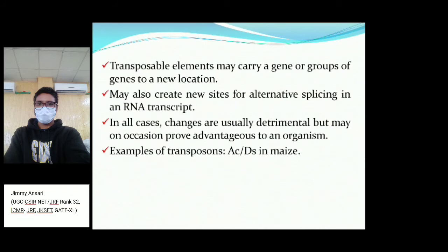Transposable elements can also create new sites for alternative splicing in an RNA transcript. In some cases these changes are detrimental, causing mutation, stopping or increasing protein production, leading to disease. However, sometimes they can be advantageous to an organism. An example of transposons is the Ac/Ds element in maize, first discovered by Barbara McClintock.